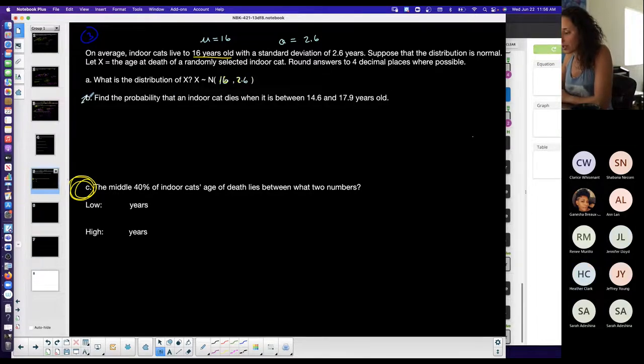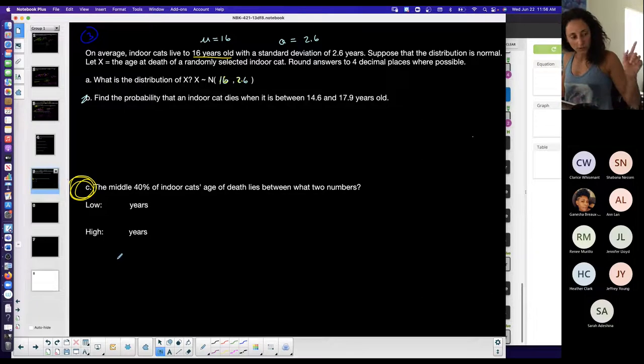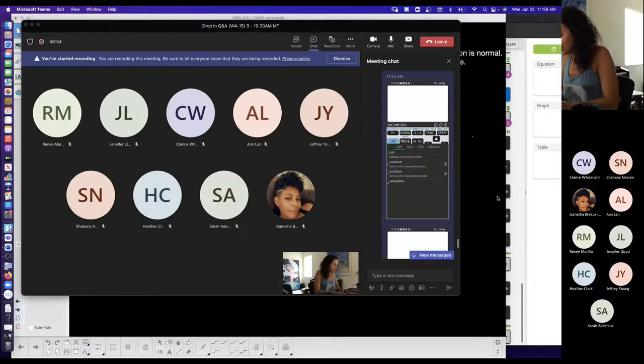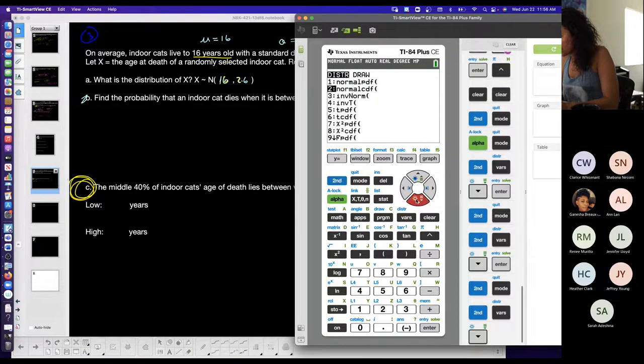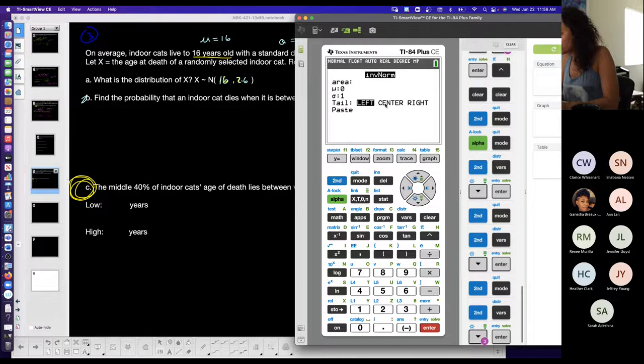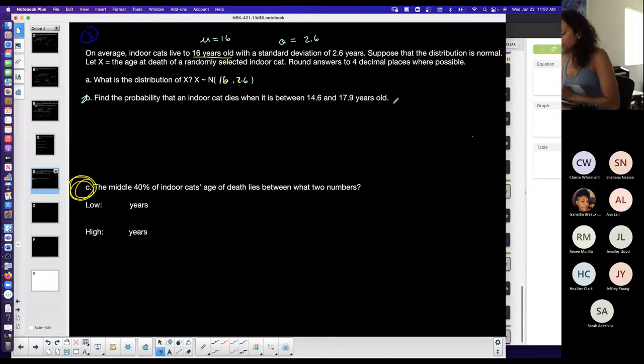I'm going to skip b for now. I want to do part c specifically for the app that you guys have because it doesn't have the option. When I go into vars inverse norm it doesn't have the option where you could pick this.